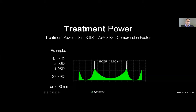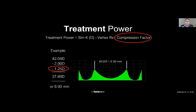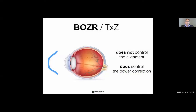The compression factor creates extra tear film power that must be corrected on the front surface of the lens. That's why all OrthoK lenses correcting myopia will have some form of plus back vertex power — when you put the lens on a focimeter, you'll measure plus in air. That plus corrects for the extra compression factor. The back optic zone radius controls the amount of myopia to correct post-fit; it does not control alignment of the lens.